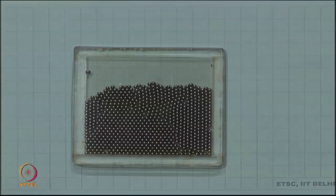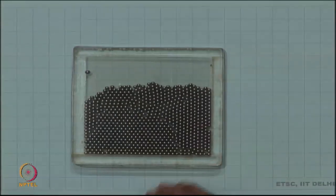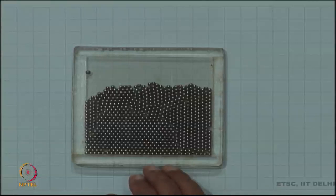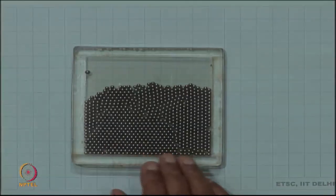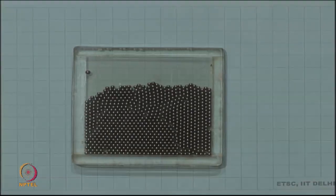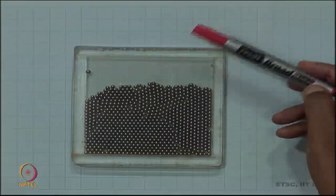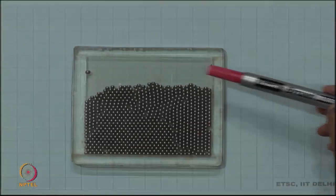I would like to show you a nice simple model to see grain boundaries and some other defects in crystal. These are ball bearings, ordinary ball bearings, maybe your cycle ball bearings, placed between two glass plates.